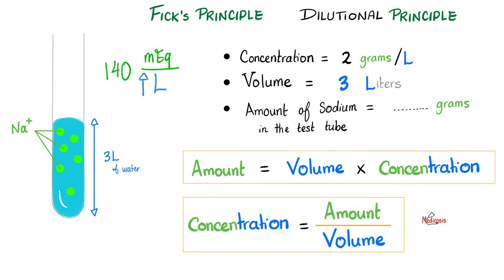Which means if I am overhydrating myself, drinking too much water like crazy, what's going to happen to the volume? It will go up. What's going to happen to the concentration? It has to go down. What do you call that? Dilutional hyponatremia. Everyone understands this.